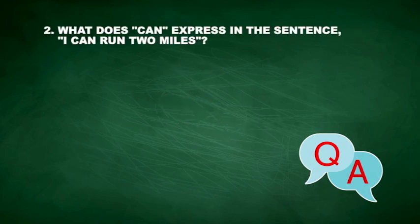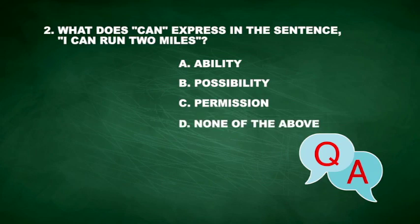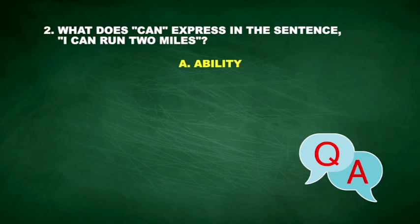Question 2: What does 'can' express in the sentence 'I can run two miles'? A. Ability. B. Possibility. C. Permission. D. None of the above. If you answered A, you know that 'can' expresses ability in that sentence.